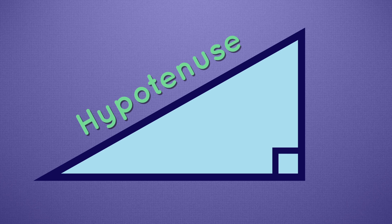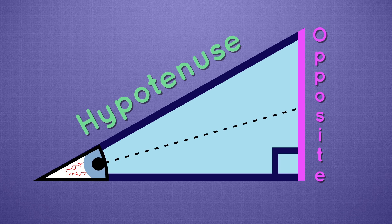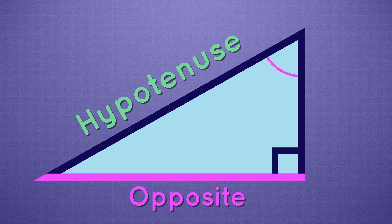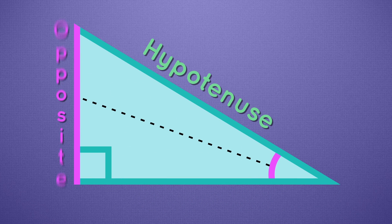But what do we call the other two sides? Well, that depends on where we're measuring from. If we are measuring from this angle here, then we call this side opposite — it's on the opposite side of the right triangle and is where our angle is looking. So if we measure from this angle here, now this is our opposite side. The opposite side is always determined by where our angle is looking. From this angle, our opposite is over here. And from this angle, our opposite is here.